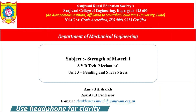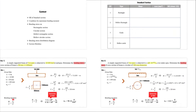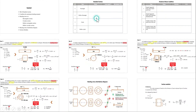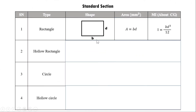Welcome to the session on bending stress and shear stress. We begin with standard sections. For a rectangle of width b and depth d, the area is b×d, and the moment of inertia about the centroidal x-axis is bd³/12.